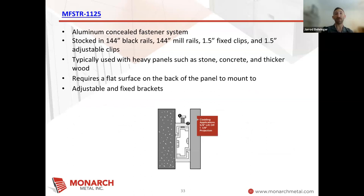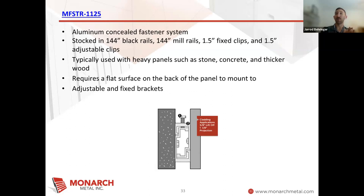Going back into our concealed fastener systems: the concealed fastener rail and clip system, which is our 1125. Like we talked about before when we talked about stone and some GFRC panels, these are typically used for pretty heavy panel types — I normally see it used at 8, 9, 10 pounds per square foot and heavier. With this one particularly, you want to make sure that you have a flat surface on the back of the panel to mount to. The reason I bring this up is because some anchors actually have a little bit of extra material that comes out the back of the panel. We don't want this — we want this whole clip sitting up against the back of the panel to provide as much hold as possible without any wiggle on the clip.